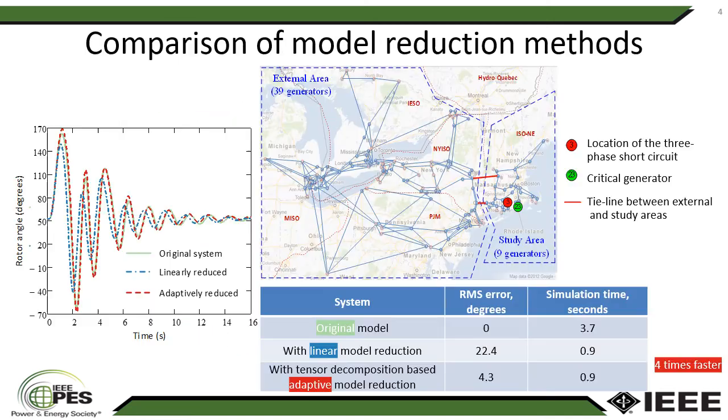We tested this approach on 140 bus PCC system where we defined study area with nine generators representing New England part of the system, and external area with 39 generators representing the rest of the system. Two areas are connected by two tie lines.